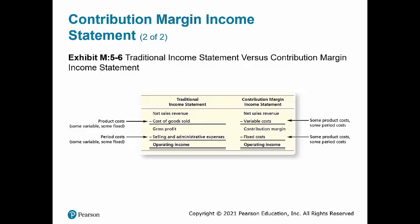Using a contribution margin income statement, we again start with net sales revenue, but then subtract all variable costs — including some product costs and some period costs — to get contribution margin. From contribution margin, we subtract all fixed costs, which include some product costs and some period costs, and we again get operating income. That is the conclusion of the demonstration for Learning Objective 2.